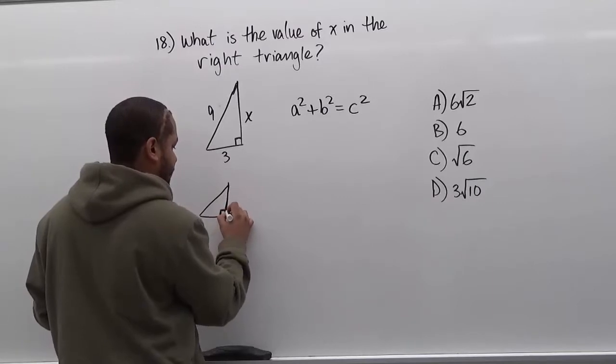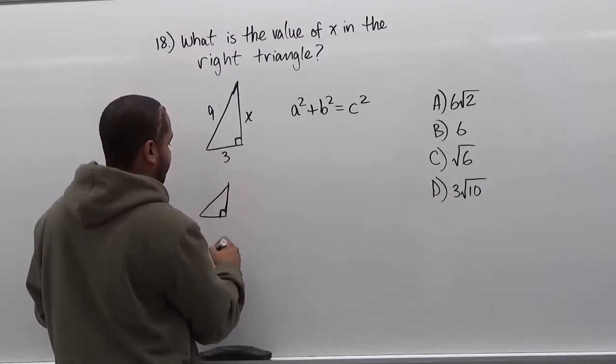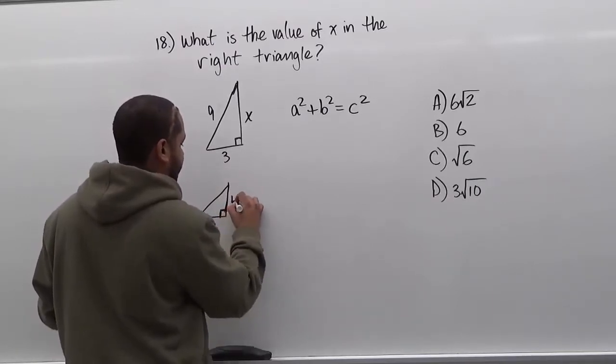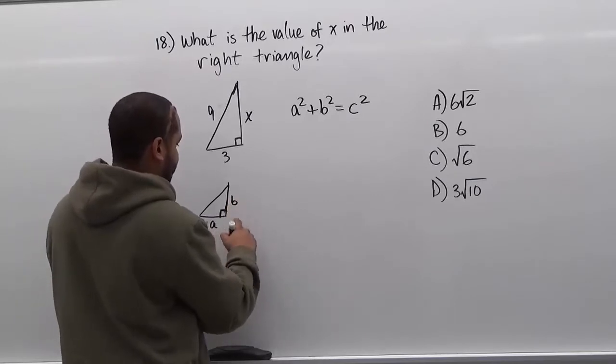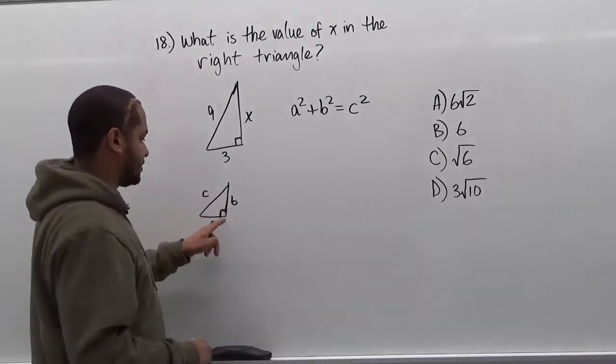Wherever we have the right angle, you have the two legs of the triangle. Usually you can let them be a or b - it doesn't matter which leg gets a or b. But the hypotenuse must always be c.